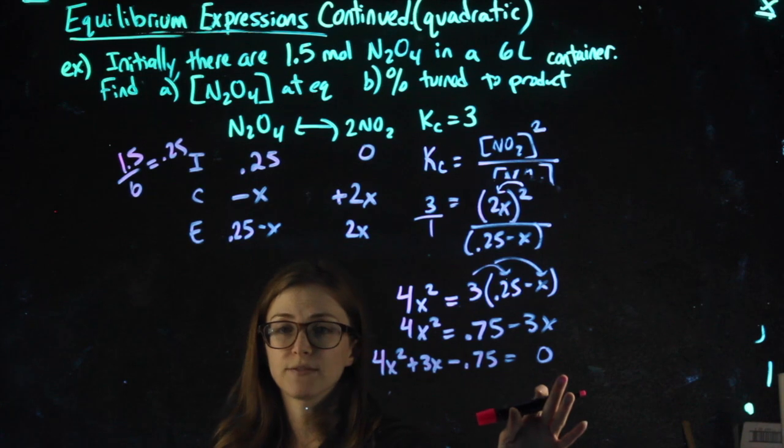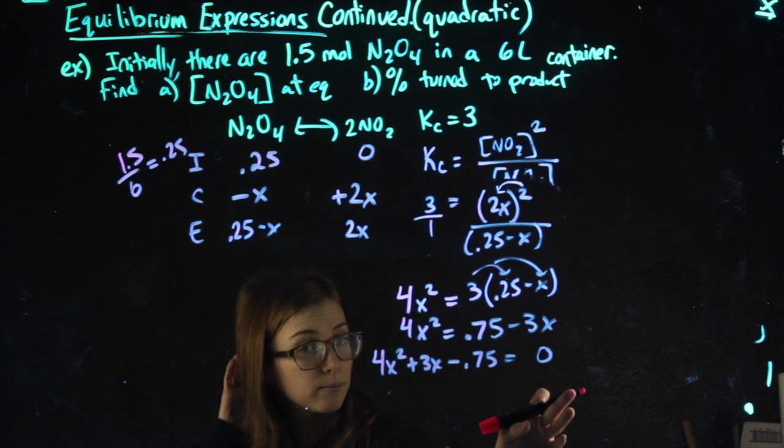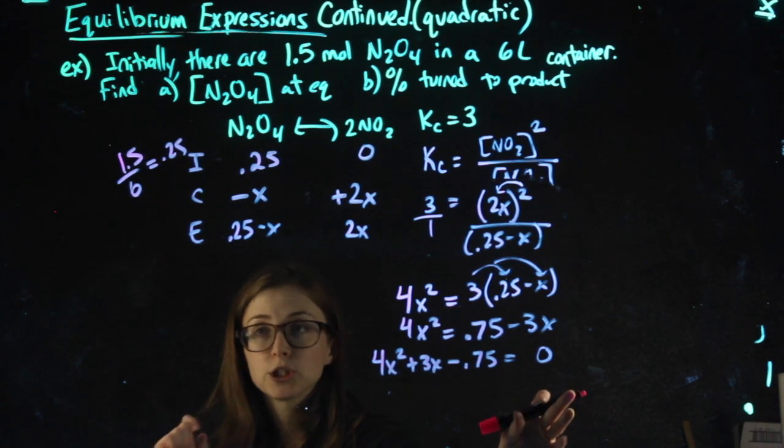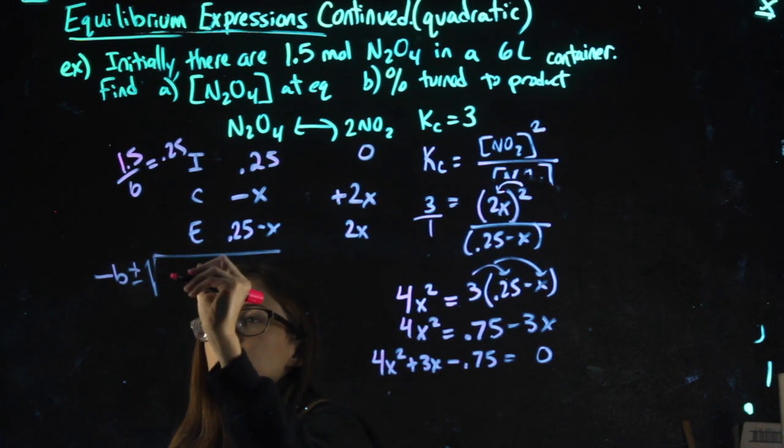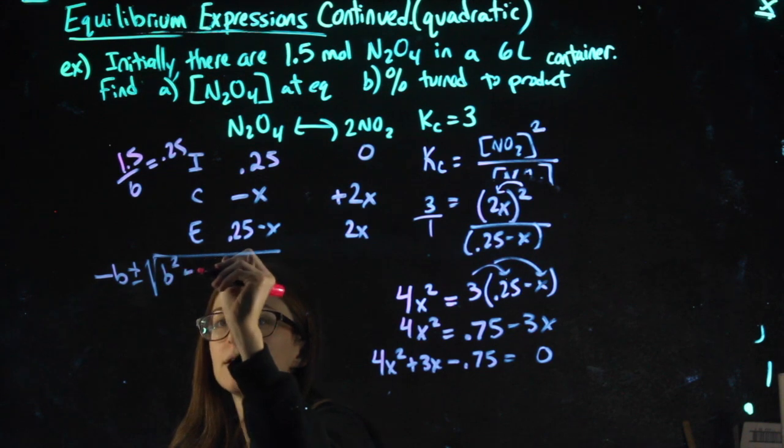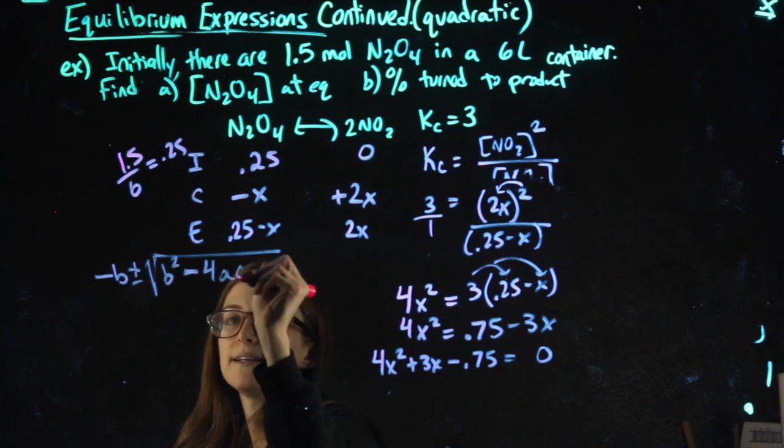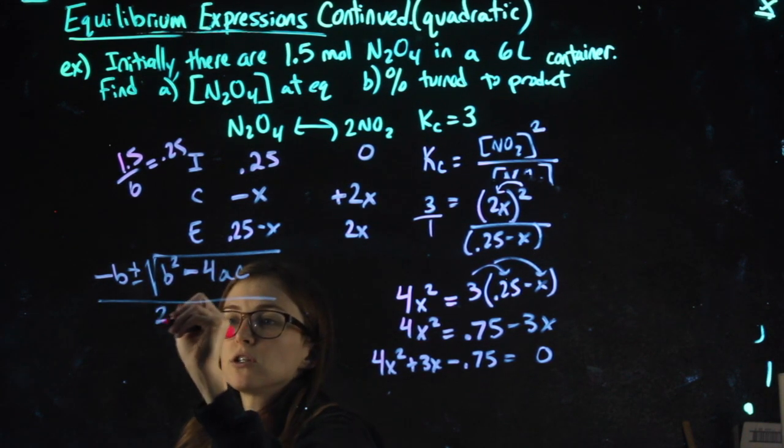So again, however you want to choose to solve this for x, you can. I'm always going to give you the quadratic equation, which is negative b plus or minus square root of b squared minus 4ac all over 2a.